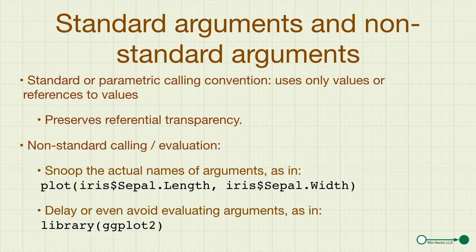For non-standard calling or evaluation, values and variables are not equivalent. In R, this allows a number of effects. For instance, things like plot — even base plot — can snoop the actual names of arguments. We can also use the facility to delay or avoid evaluating arguments at all. This is why experienced R programmers will be familiar with the notation library(ggplot2), which brings in the package named ggplot2, treating that as a string and not as a variable containing another value.